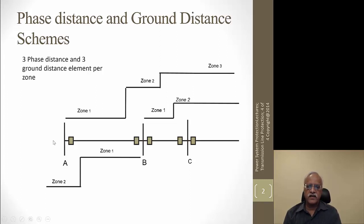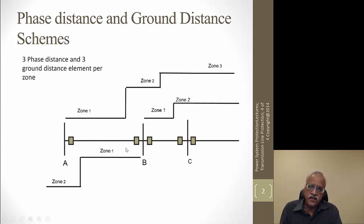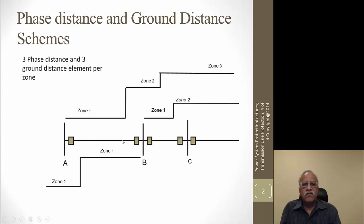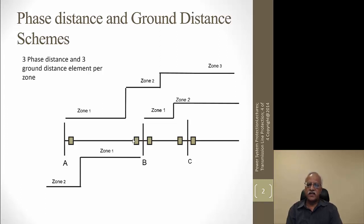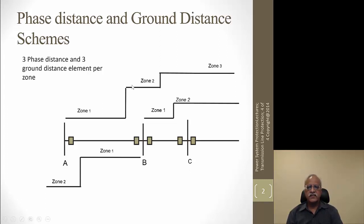We cannot measure 100% of the line section instantaneously to make a decision, because due to CT and PT errors, relay design errors, and line parameter errors, we can be sure only if the measured impedance is about 80% to 85% of the actual line impedance between line section A and B, and we allow the relay to trip instantaneously. If the fault is in the last 15% of the line section, we are not sure whether it is in line AB towards end B or in line section BC very close to B. So to make this differentiation, we provide a time delay — zone 1 distance relay, phase distance relay, and ground distance relay.